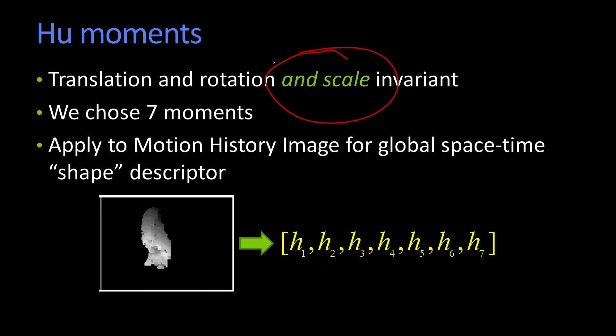But we do get scale differences, right? If things are closer to the camera or farther from the camera, things get bigger or smaller. So we want to create some descriptors that are invariant.